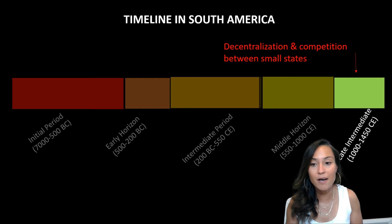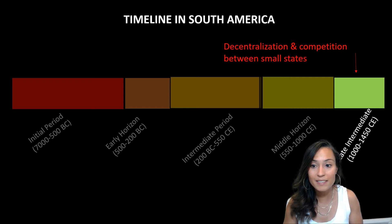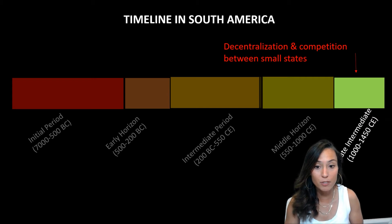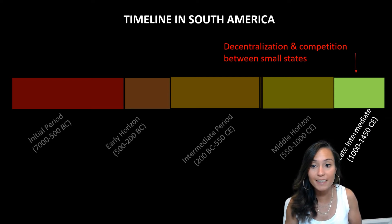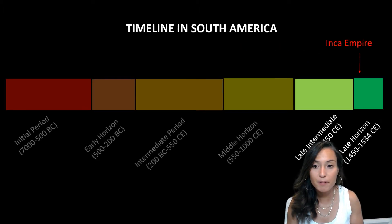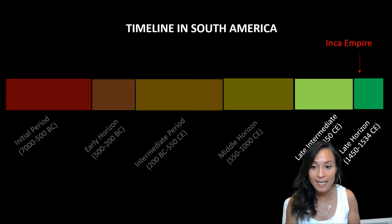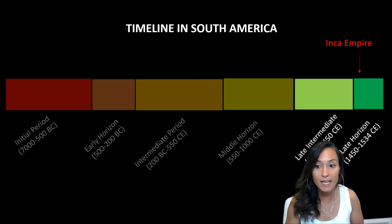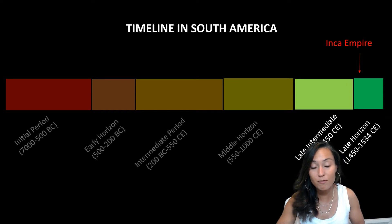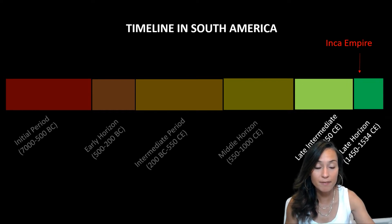Around 1000 CE, the centralized authority at Tiwanaku began to fray and a political vacuum of small competing states emerged. This period of decentralization and conflict is known as the Late Intermediate Period. Following this period of conflict and war, this political vacuum was filled by the Incan state. The Incan Empire flourished in the lowland and highland regions of the Andes for roughly 100 years, beginning in the mid-15th century.